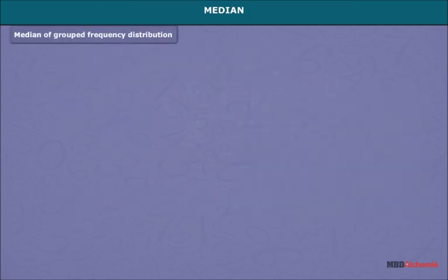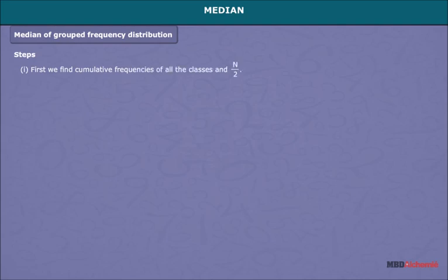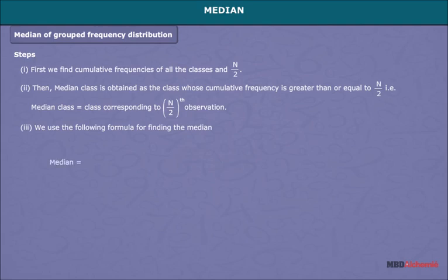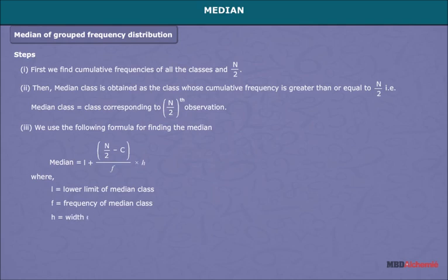For median of grouped frequency distribution, first we find cumulative frequencies of all the classes and n/2. Then the median class is obtained as the class whose cumulative frequency is greater than or equal to n/2. We then use the formula: Median = L + [(n/2 − c) / f] × h, where L is the lower limit of the median class, f is the frequency of the median class, h is the width of the class, n is the number of observations, and c is the cumulative frequency of the class preceding the median class.